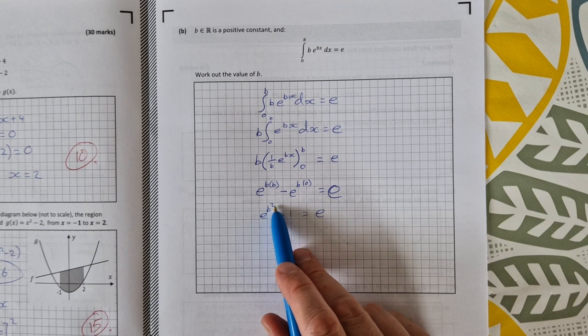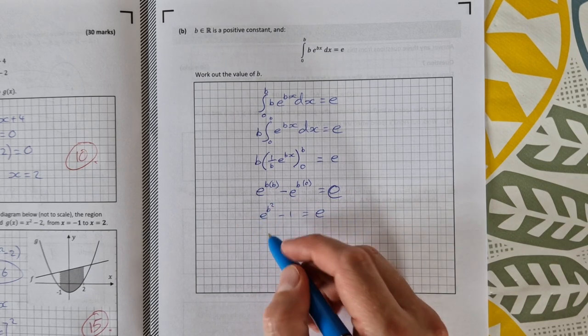I'm trying to find b on its own, so I need to isolate this term here. So that's e^(b²) = e + 1.